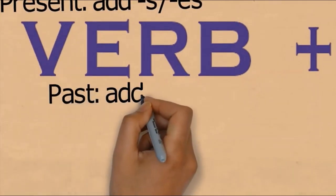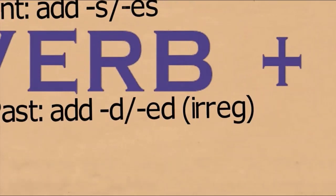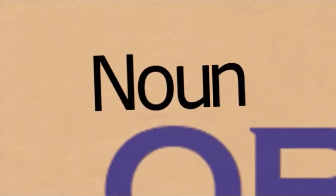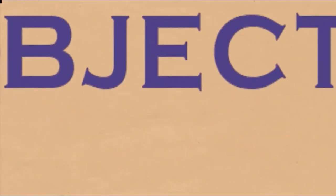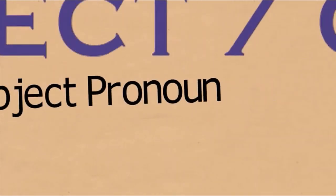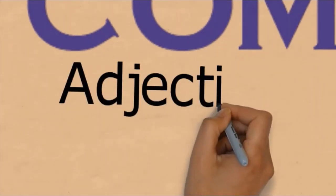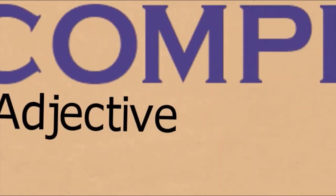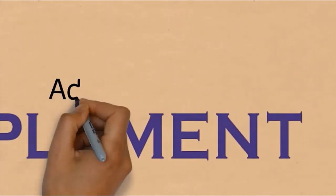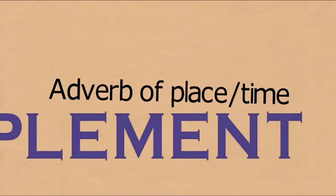In past tense, add -d or -ed, and irregular verbs have their own forms. For objects, the form is the same as subject - noun form - but must use object pronouns, so don't mix them up with subject pronouns. Complements can be in adjective form or adverb of place or time, also called keterangan tempat or waktu.